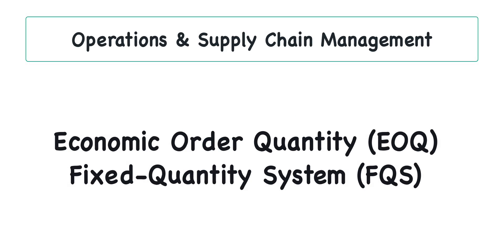This video will illustrate how to calculate the economic order quantity or EOQ, along with the reorder point with safety stock, and the average number of orders per year under a fixed quantity inventory system or FQS. Here's the data for our problem.